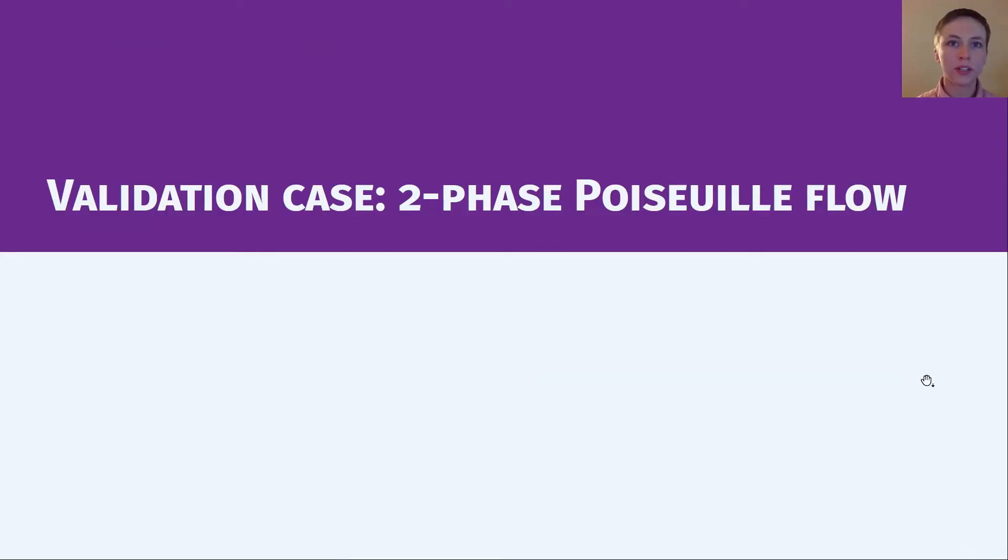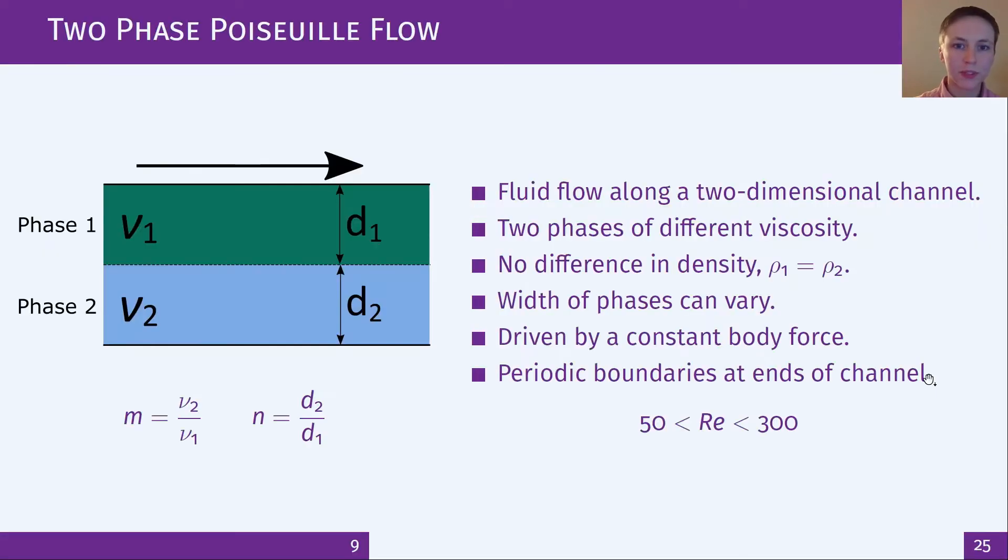Here's the two-phase Poiseuille flow case for validation of this model. Here's the case setup where I've got fluid flow along a channel with periodic boundaries as with the single phase and it's driven by a constant body force. The channel is split into two phases of the same density but different viscosity and they can also have different widths. There's two key parameters here which is the phase viscosity ratio m and the phase width ratio n.